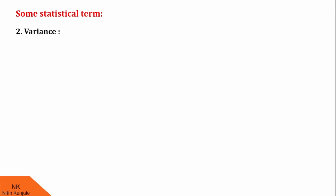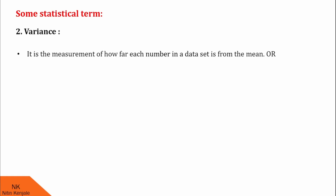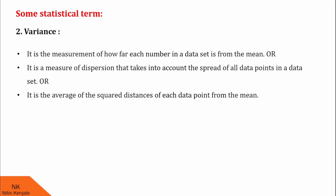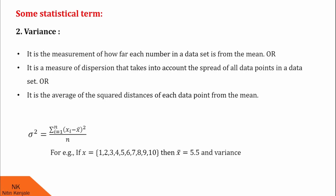Now we see what is variance. It is the measurement of how far each number in the data set is from the mean, or the measure of dispersion that takes into account the spread of all data points, or the average of the squared distances of each data point from the mean. It is denoted by σ² and is defined as σ² = Σ(xᵢ − x̄)² / n, where i runs from 1 to n. Using the same set x with x̄ = 5.5, its variance σ² = [(1−5.5)² + (2−5.5)² + ... + (10−5.5)²] / 10, which equals 8.25.